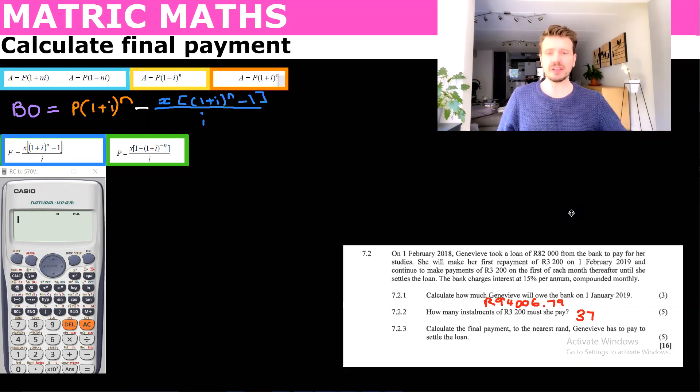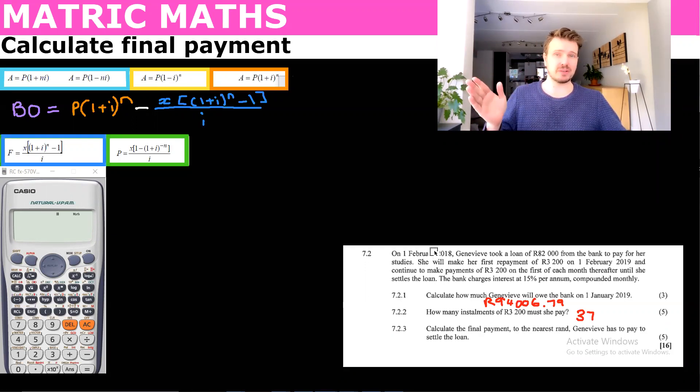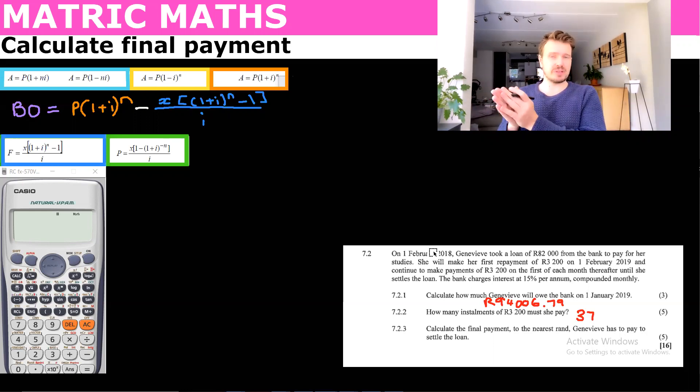So in the previous video we learned how to find out how many installments you need to pay. And now we're going to look at the final payment. So remember the final payment is always obviously the last payment. So what you can do is you can get the balance outstanding just before, in other words the month before you make that payment, that last payment, you get the balance outstanding.